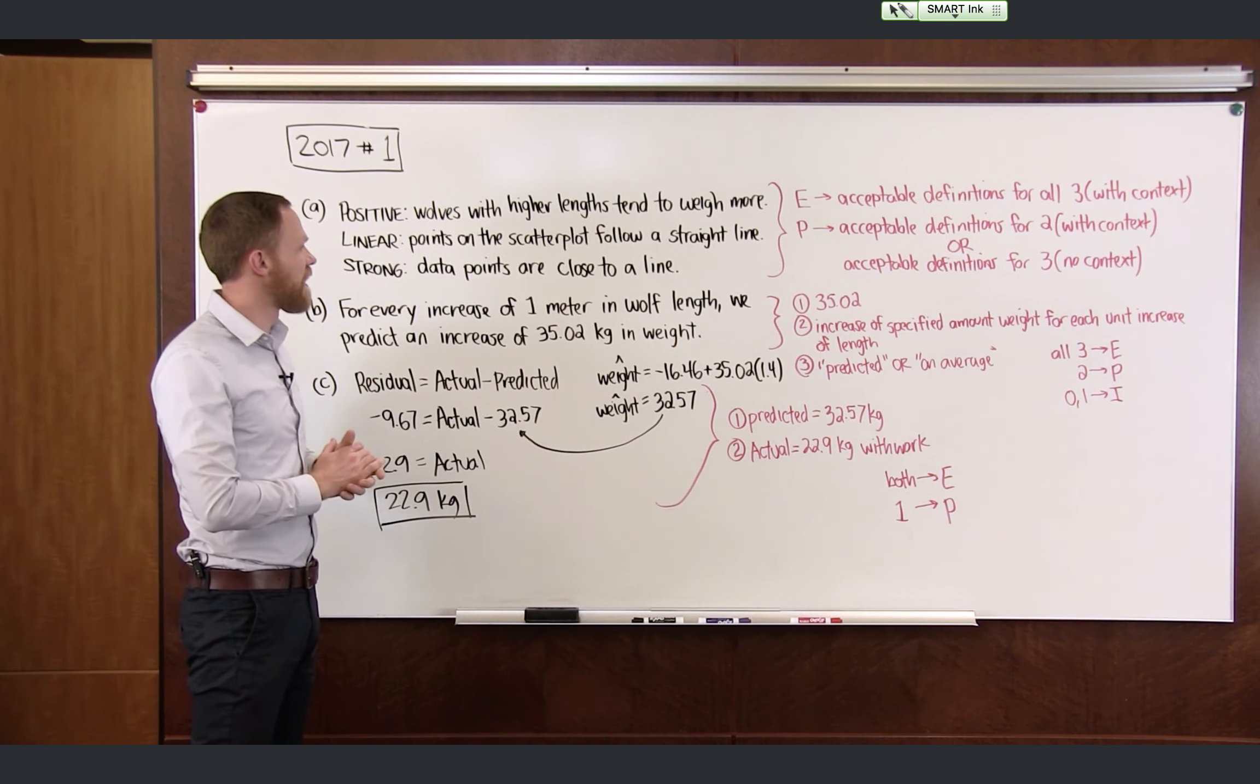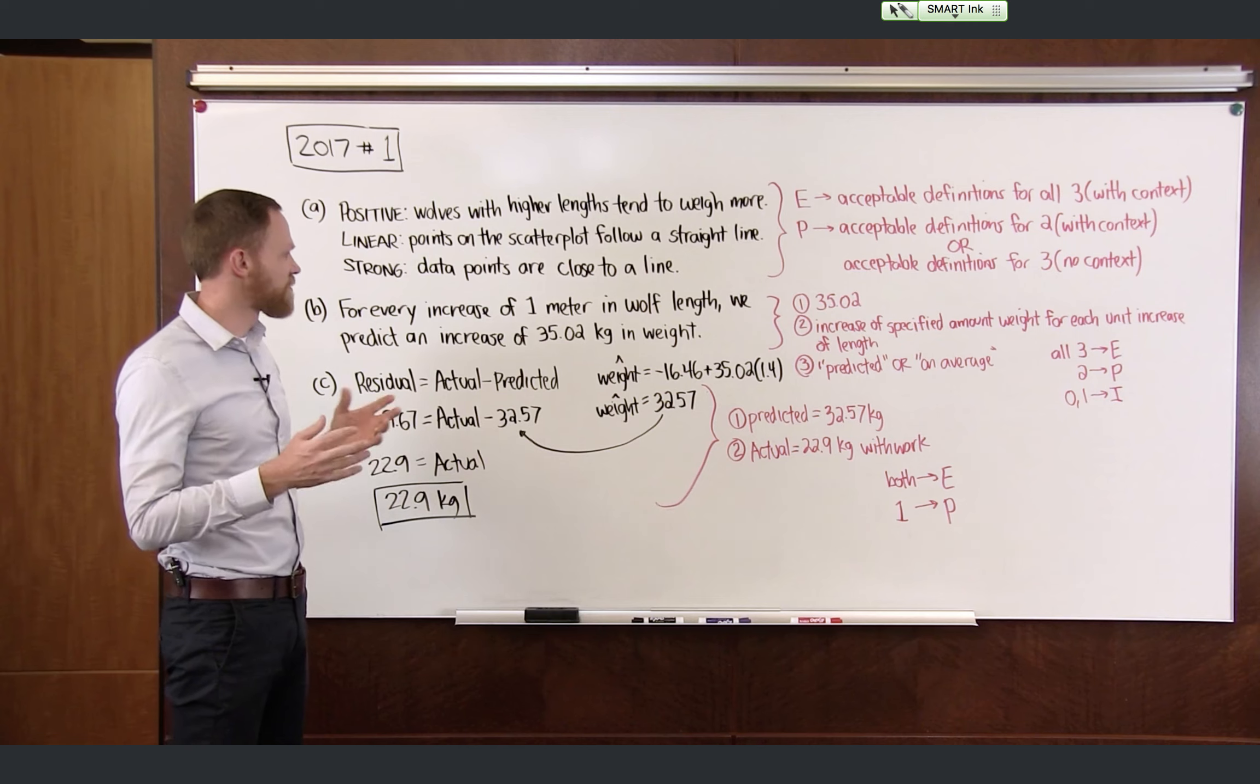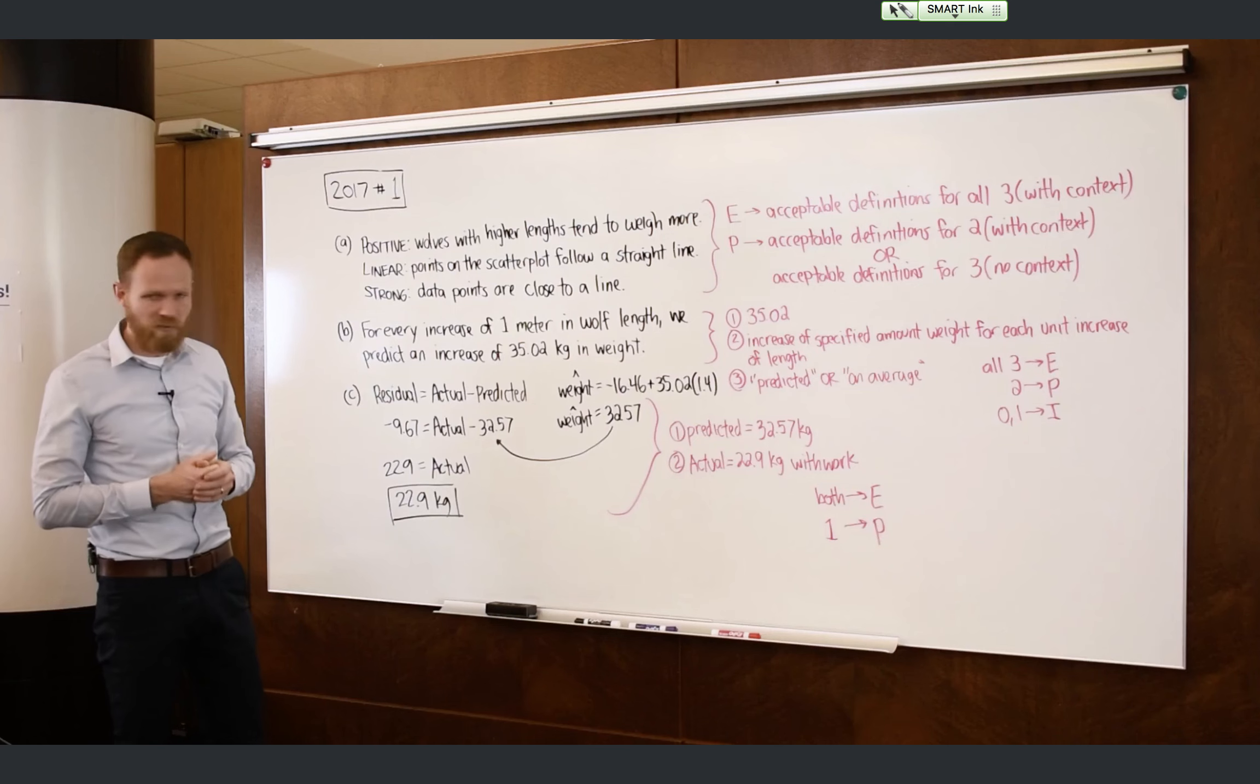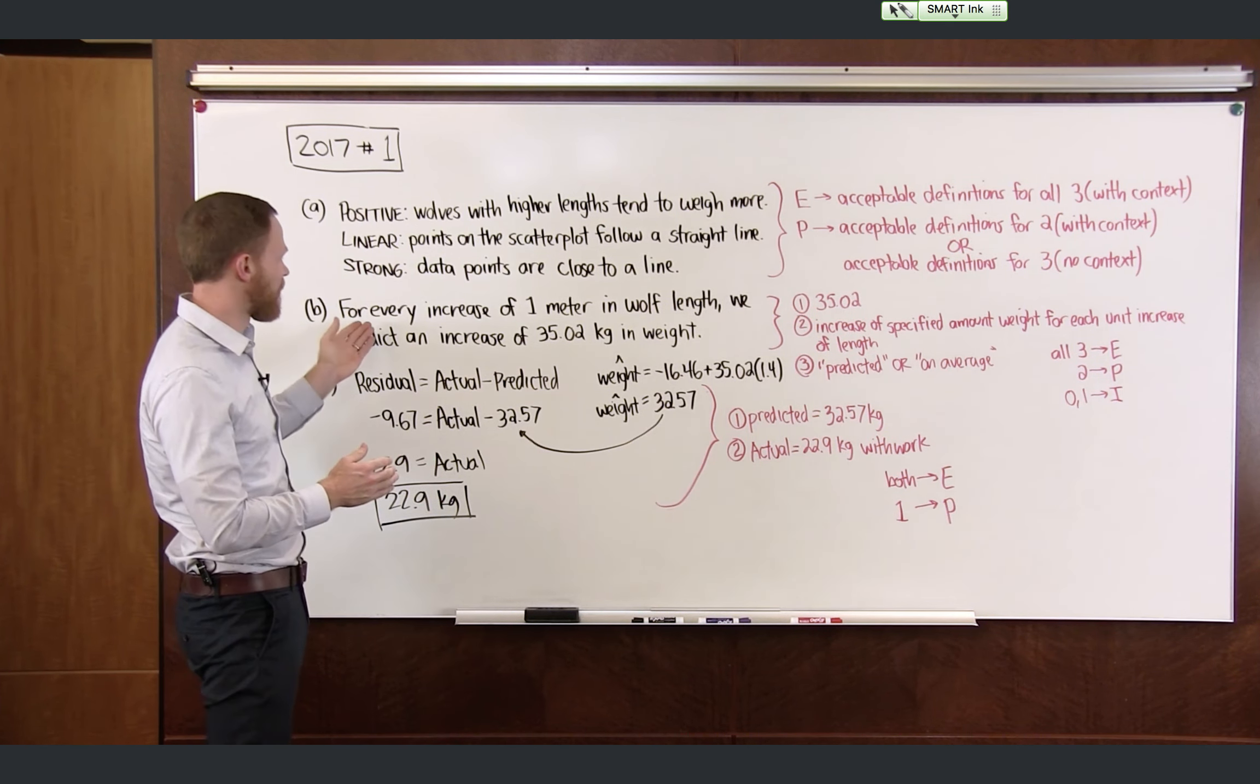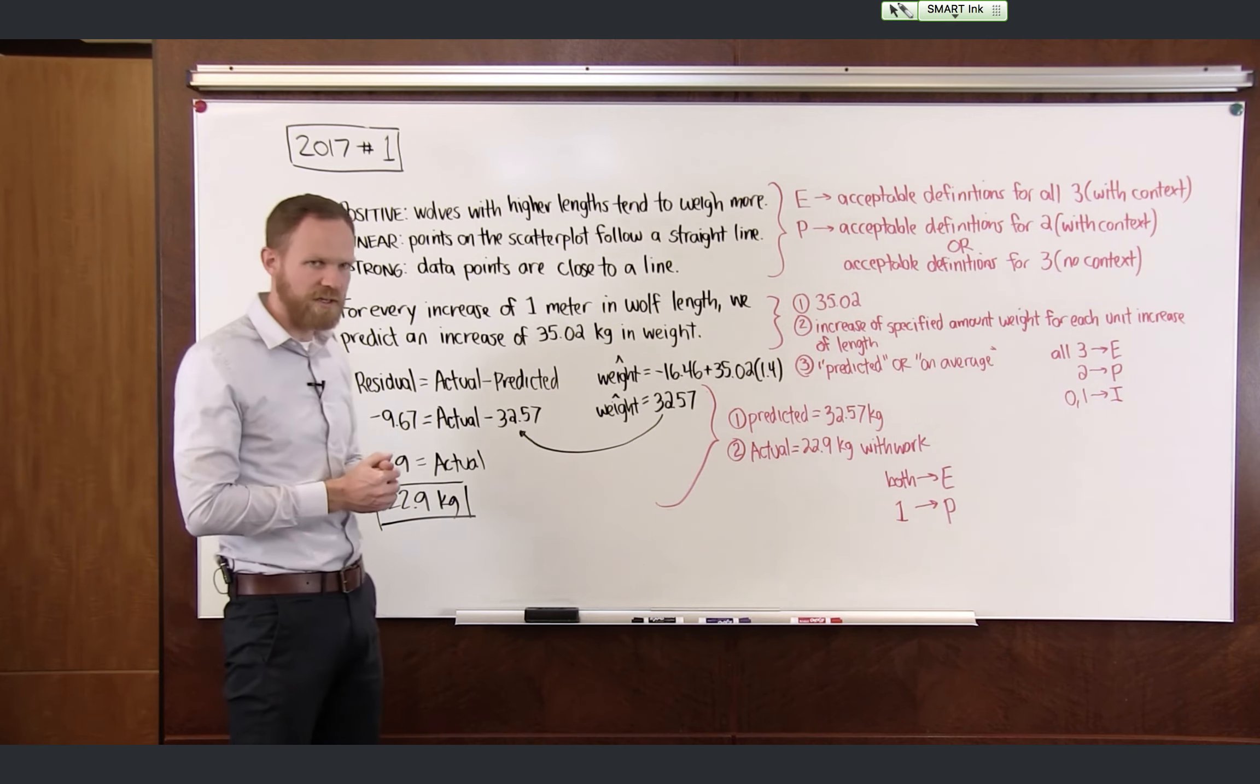As for linear, we just said that the points on the scatter plot tend to follow a straight line. And as far as strength is concerned, they said that it was strong, which means that those data points were close to the line. Now for Part B, a very common AP type question asks you to interpret the slope in the context of the problem. And so we have for every increase of one meter in wolf length, we predict an increase of 35.02 kilograms in the weight.